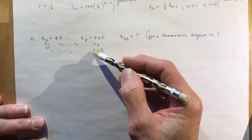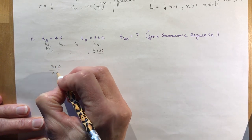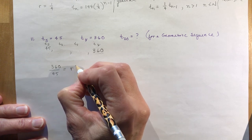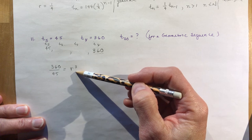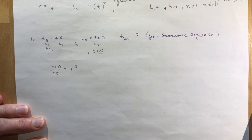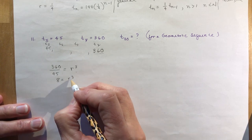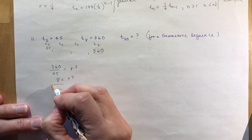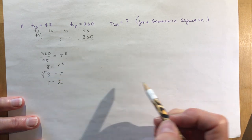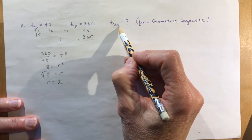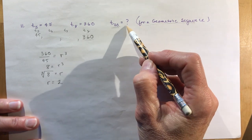360 divided by 45 equals 8, so r cubed equals 8. Taking the cube root of 8 gives r equals 2. Now you know the common ratio is 2, and you can find the 20th term. The problem told you it was a geometric sequence.